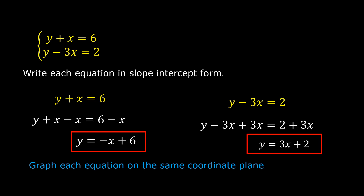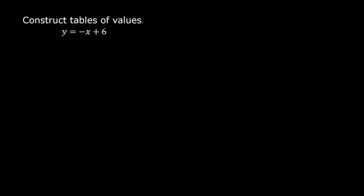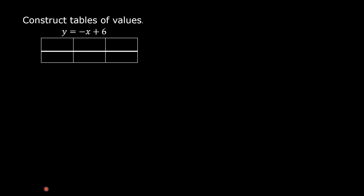Next, we are going to graph each equation on the same coordinate plane. Let us construct tables of values. Our first equation in slope-intercept form is y is equal to negative x plus 6. Let us construct a table with x and y. Assign values to x and solve for the corresponding value of y. It is suggested that you assign small values to x.